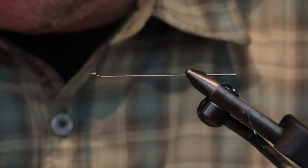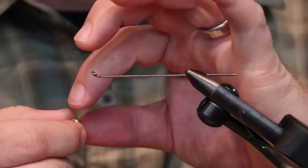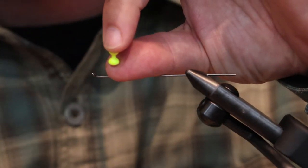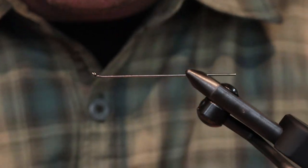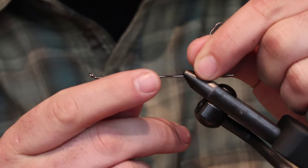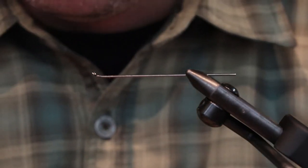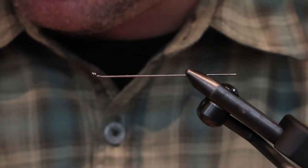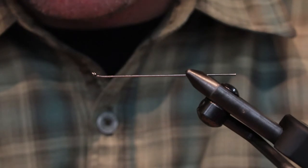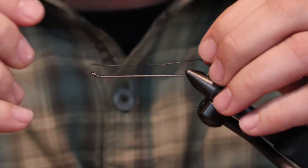The other way to do it, if you're using flat dumbbell eyes where there's a flat space in the middle, it's really nice to put the intruder wire on each side of the hook because what that does is it builds a really nice platform for the dumbbell eyes to sit on.